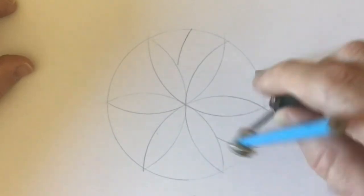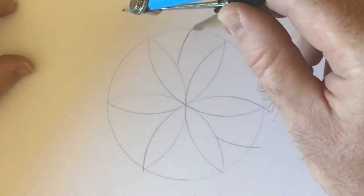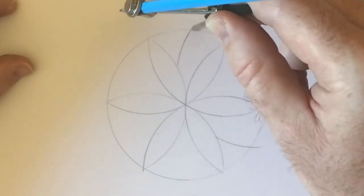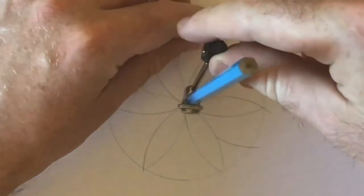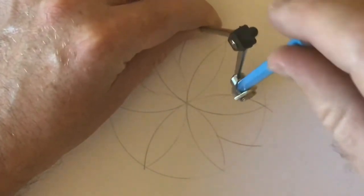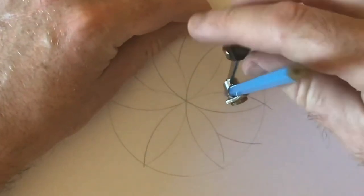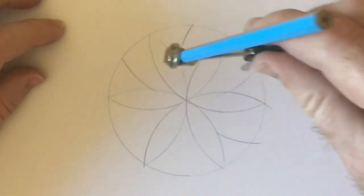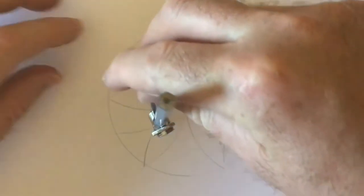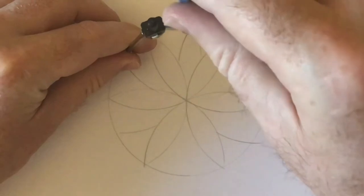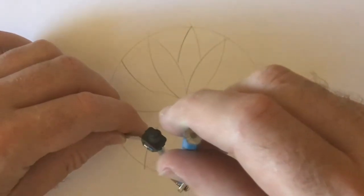And look, I just lift the pencil up and put it over that so I don't draw over the original line. So lift the pencil up, transfer it across, and then put the compass on that pencil mark that was just made to draw another circle.